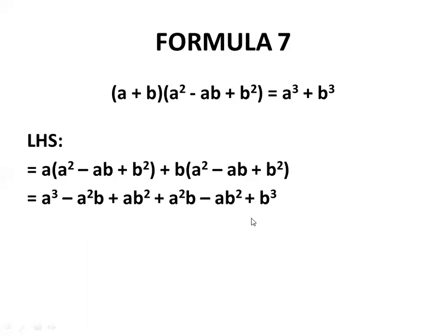Now we are going to cancel the terms. The a²b terms will cancel each other. The ab² terms will cancel each other. We will be left with a³ + b³, which proves formula number 7.